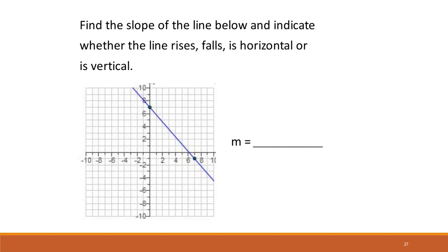If we want to find the slope of this function, first we ask: is it going to be a negative or positive slope? We can see that the line is falling, so we know already that it's a negative slope. We can identify two points: one at positive 7 on the y-axis and one at positive 7 on the x-axis. So we're going down 7 and over 7, because it's rise over run. We get negative 7 over 7, which simplifies to negative 1.